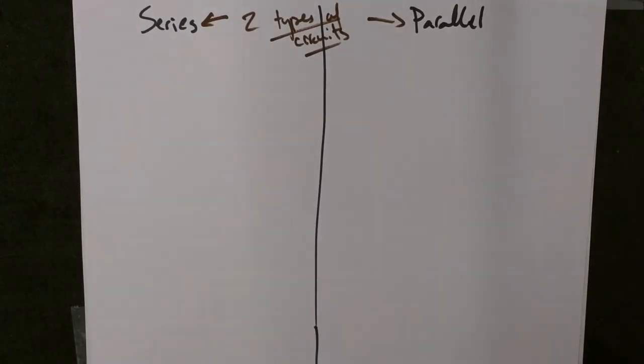We could have two types of circuits. You should have learned this in Phi Chem. This will just be a refresher for you. Series and parallel.